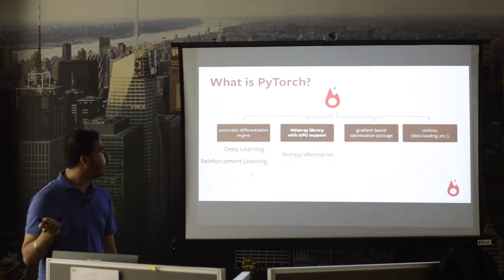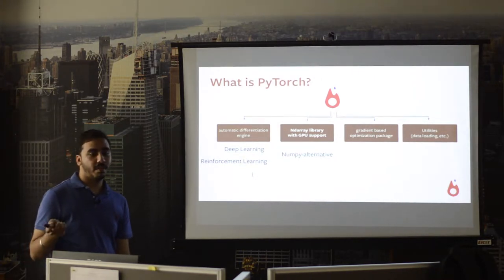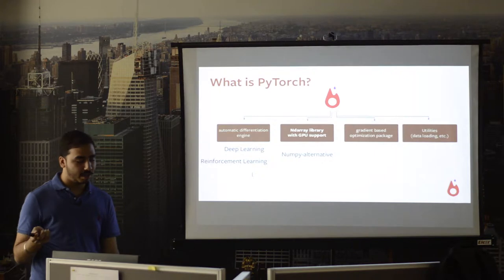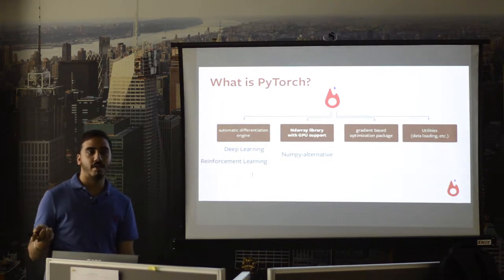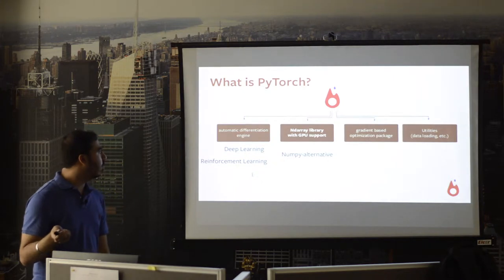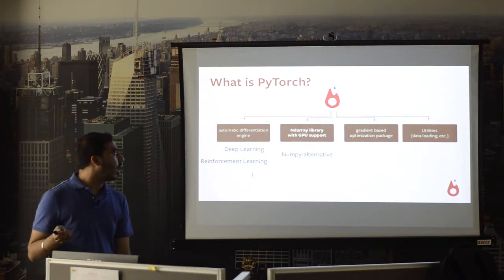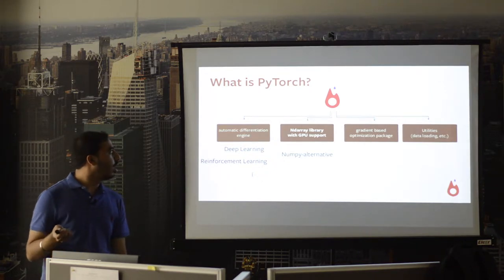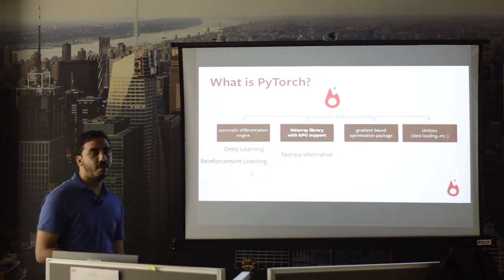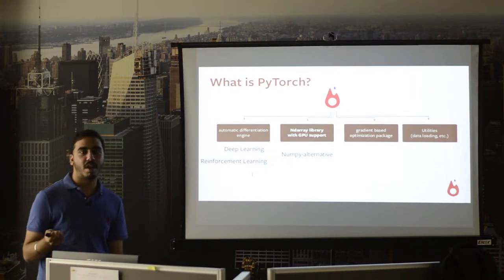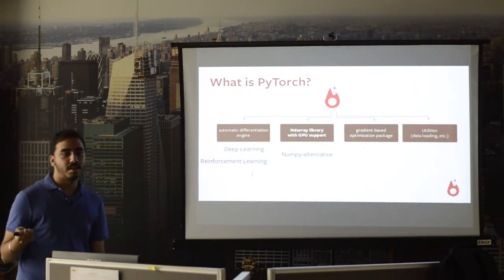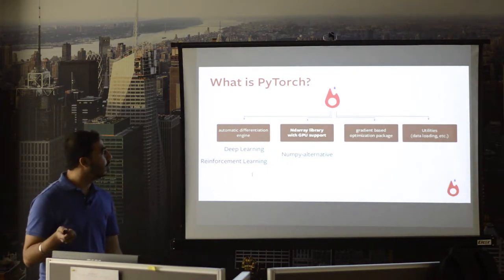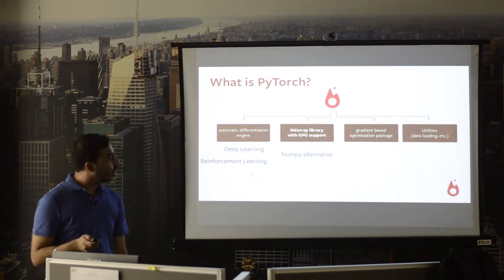PyTorch consists of many different key components, one of which is the automatic differentiation engine. For those working on deep learning, you need to calculate gradients again and again for different things, so PyTorch automatically handles that. You also have GPU acceleration support for faster computation and built-in optimizers — the standard is stochastic gradient descent, and there are others like Adam and RMSProp.